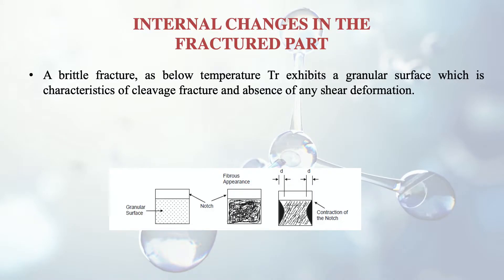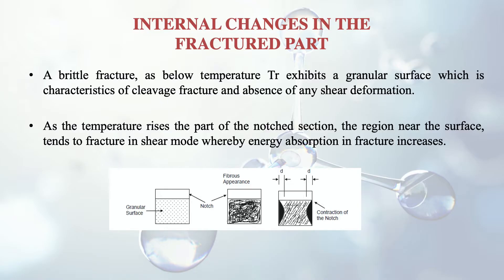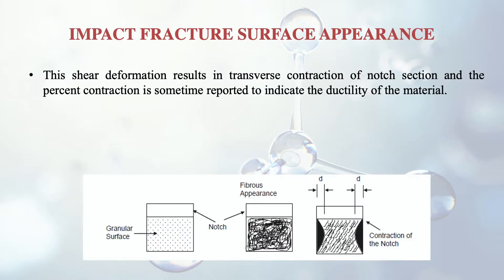Regarding microscopic changes in the specimen: a brittle fracture below the transition temperature TR exhibits a granular surface, which is characteristic of cleavage fracture and absence of any shear deformation. As the temperature rises, the part of the notch section near the surface tends to fracture in shear mode, whereby energy absorption in fracture increases. This shear deformation results in transverse contraction of the notch, and the percent contraction is sometimes reported to indicate the ductility of the material.